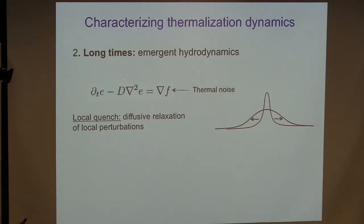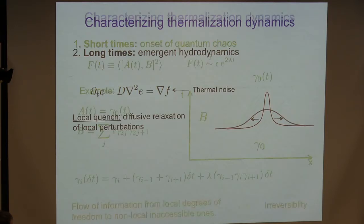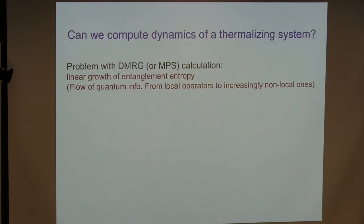As the operator grows, it becomes more and more complicated. Information flows from local degrees of freedom to highly non-local ones, and that allows for irreversibility because information is effectively lost into extremely non-local degrees of freedom. It allows at the next stage for hydrodynamics to develop. This hydrodynamics is governed by a very small set of coefficients — if we're able to calculate these, we'll know the dynamics of the system at long distances. When we have conserved quantities, the hydrodynamics is basically the diffusion of these conserved quantities.